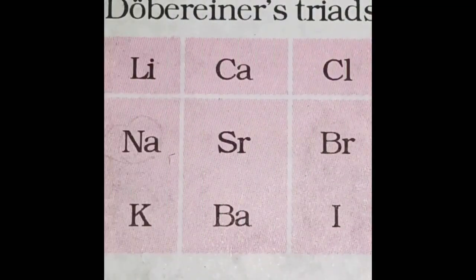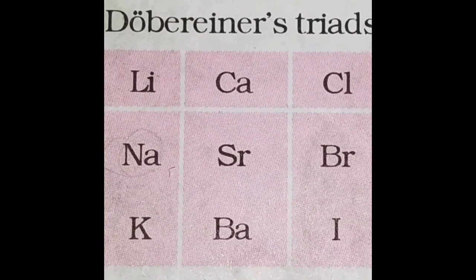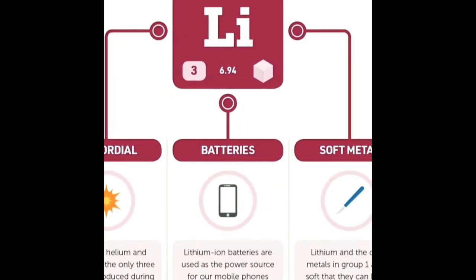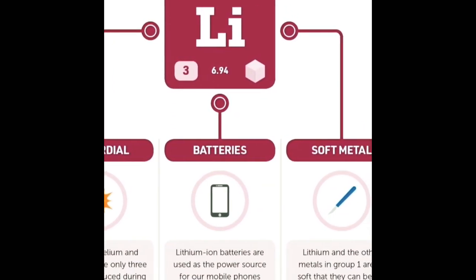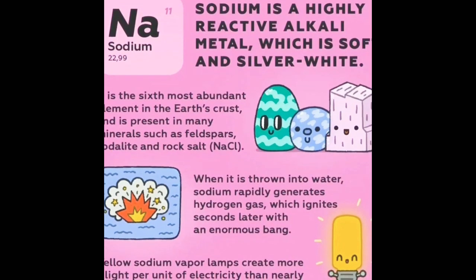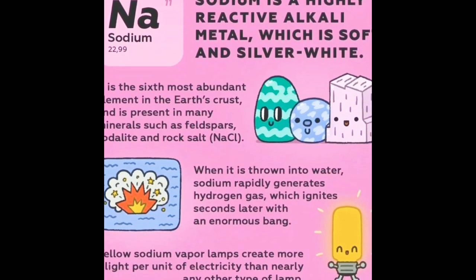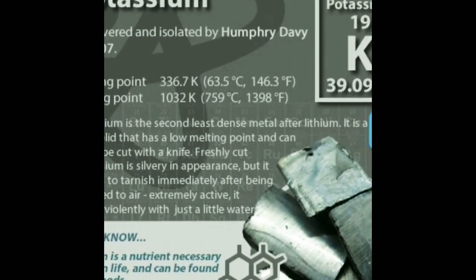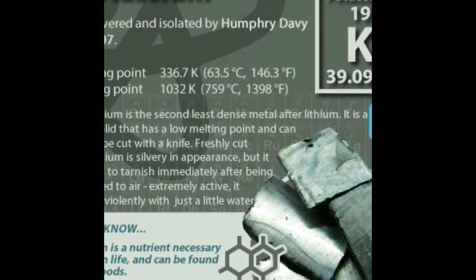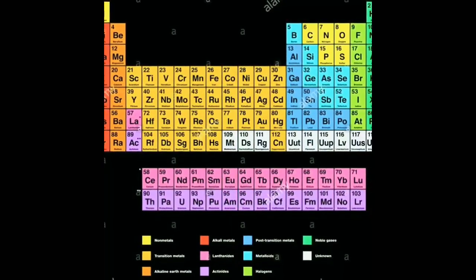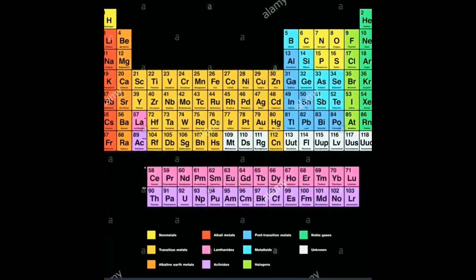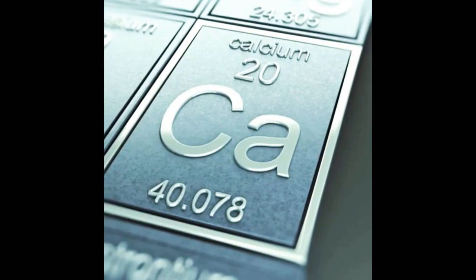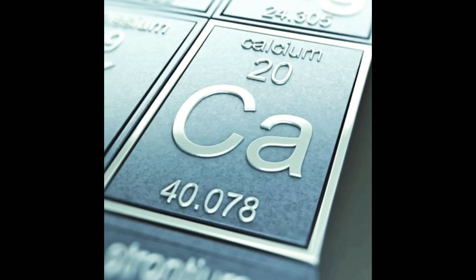During Dobereiner's time, less than 33 elements were known. It was for the first time when Dobereiner came up with the idea of trend among properties of elements. Though his triad is not the most acceptable one, yet getting inspired from his idea of arranging elements, chemists researched on the periodic table and here today we have the modern periodic table with 118 elements known, out of which 94 are naturally occurring and the remaining is synthetic.